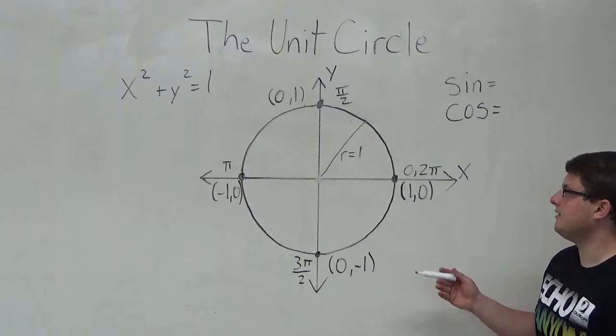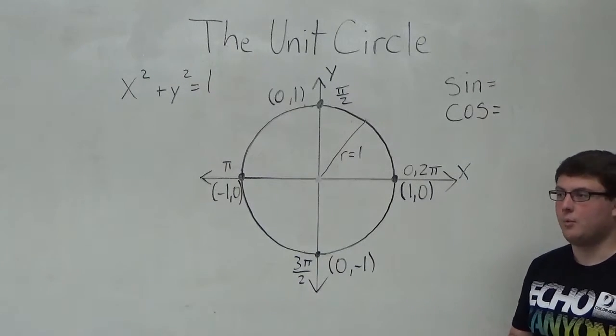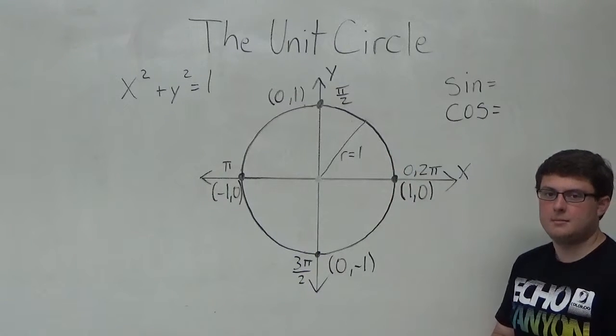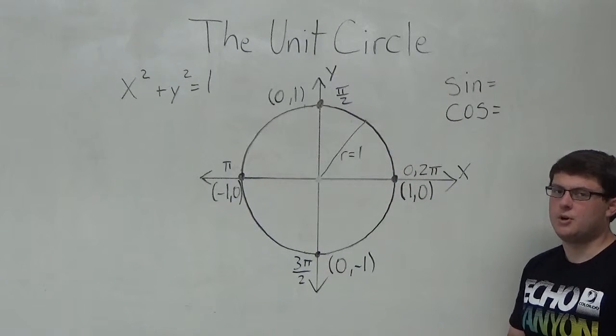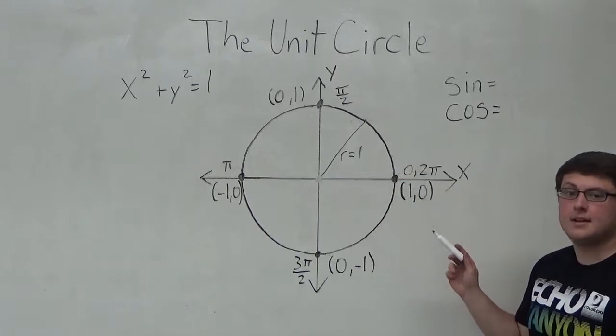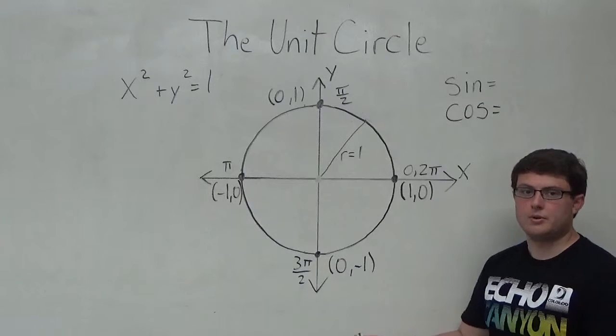The first thing is we're going to define the unit circle, what it actually is. The base formula for a circle is x² + y² = 1, and we call that the unit circle. What that means is we have a circle with radius 1, centered around the origin at (0, 0).